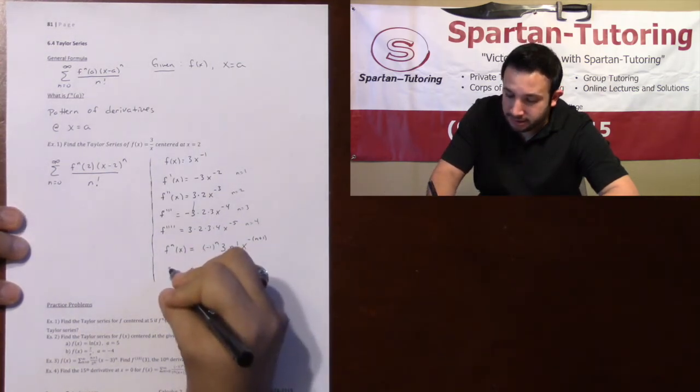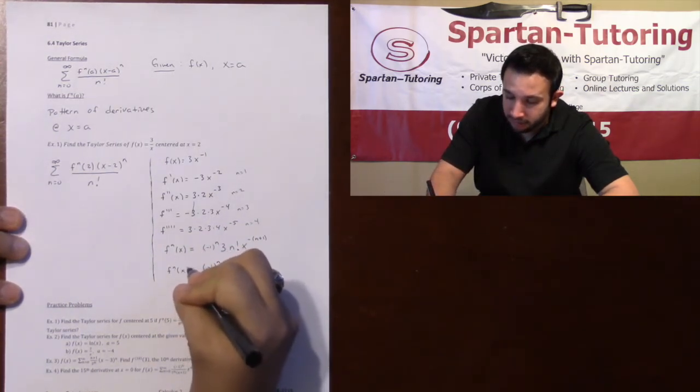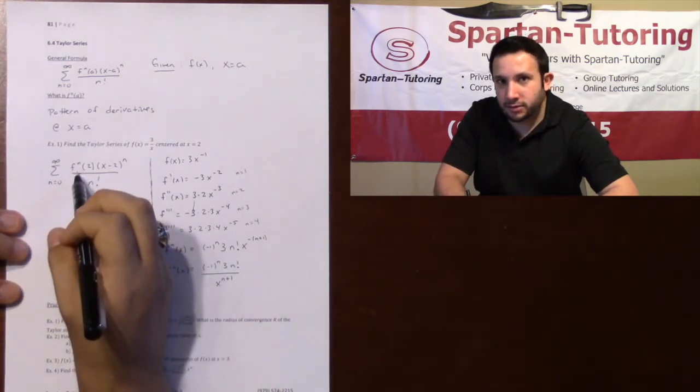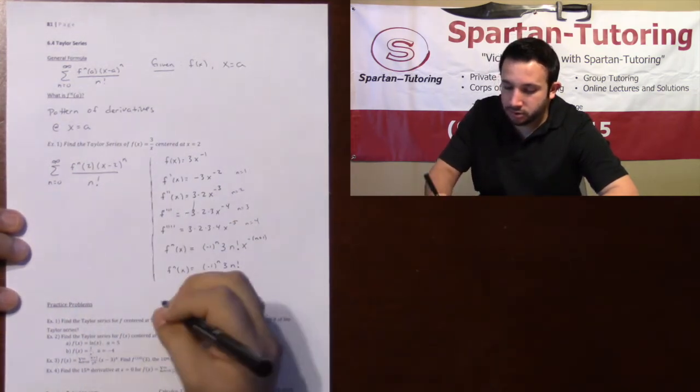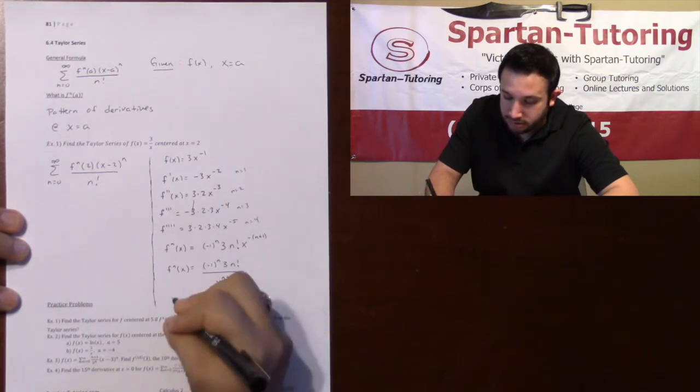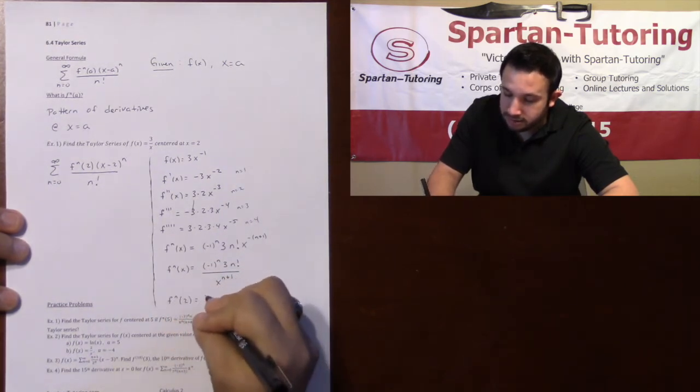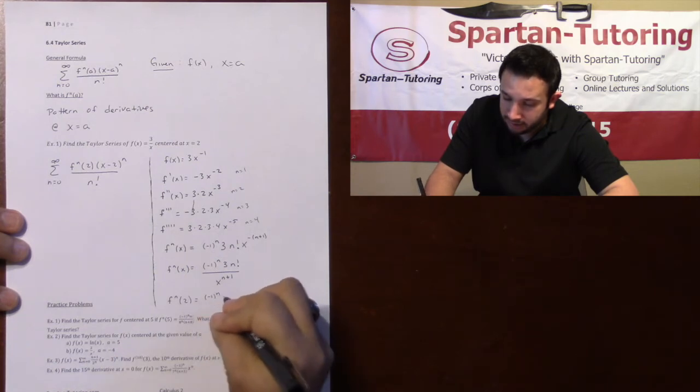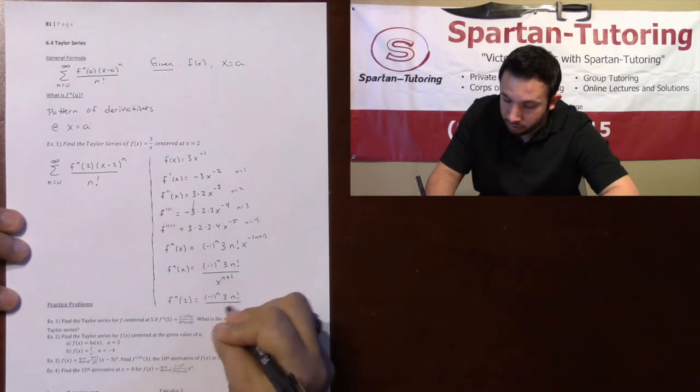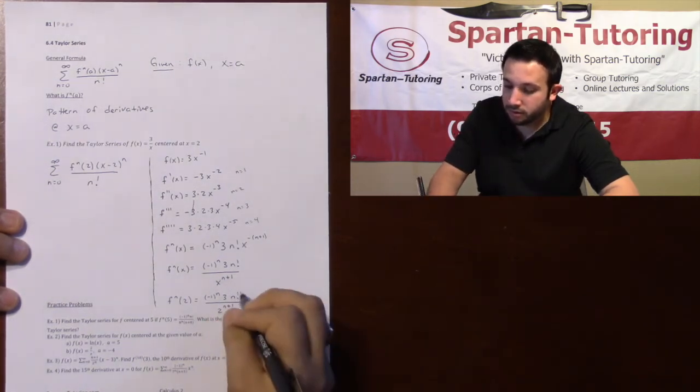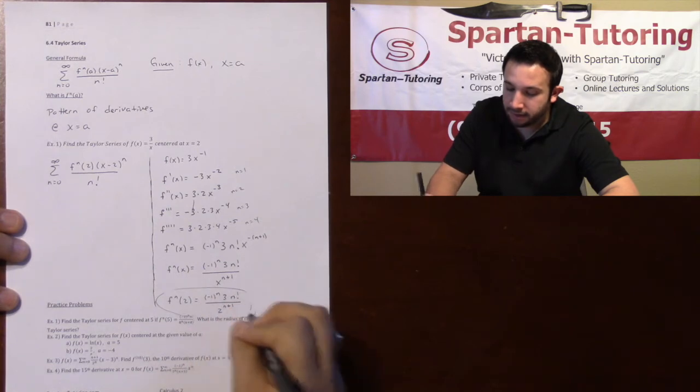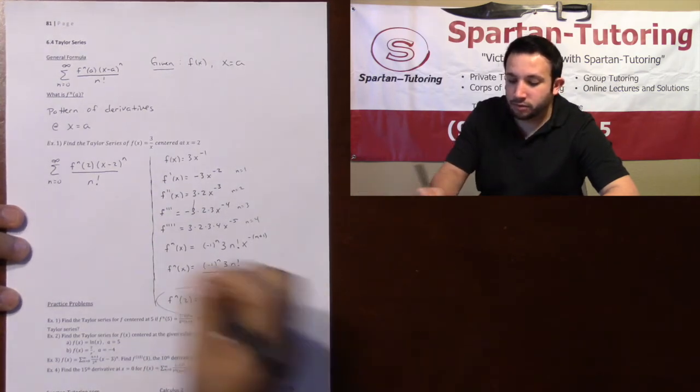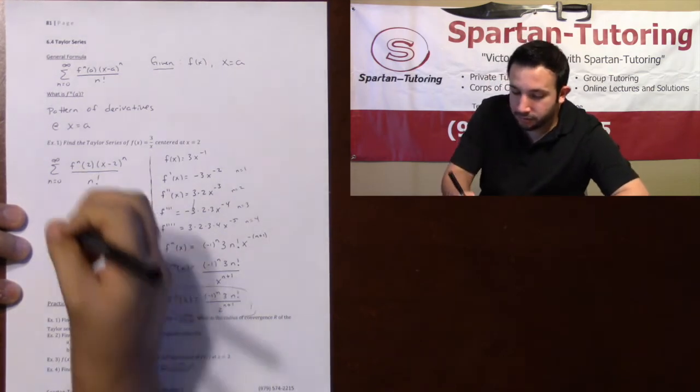And if this is f to the n of x, if you want to find f to the n of 2, you plug 2 into x. And so f to the n of 2 is simply going to be negative 1 to the n times 3 times n factorial all over 2 to the n plus 1. And now that I have that f to the n of 2, we plug it in and simplify.